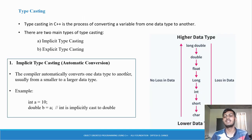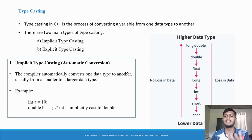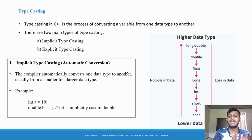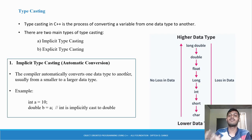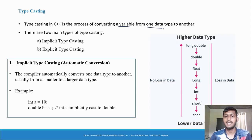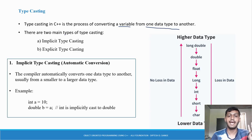Let's understand type casting. Same as in C++, type casting means converting one data type to another data type. So type casting in C++ is a process of converting a variable from one data type to another data type.